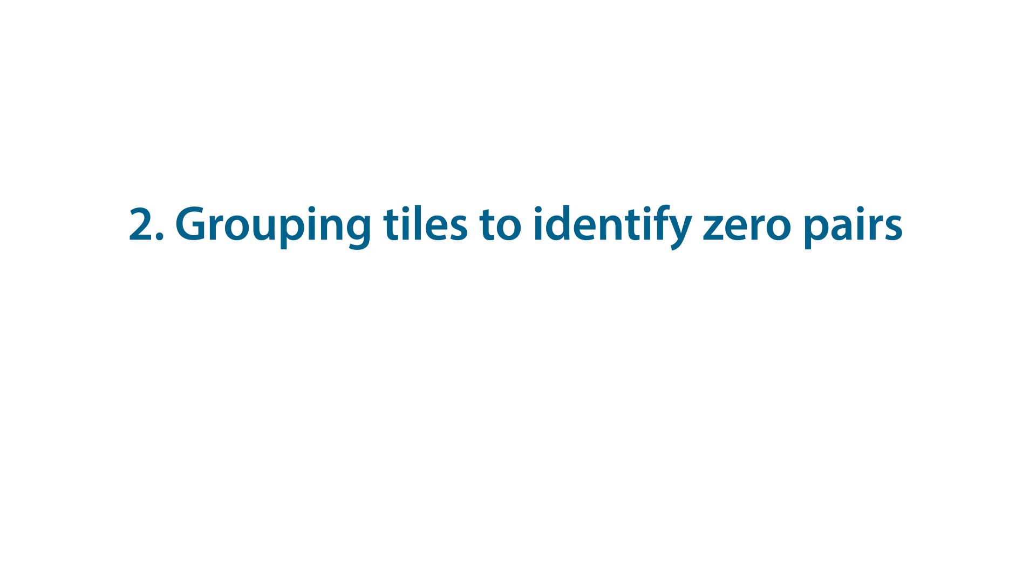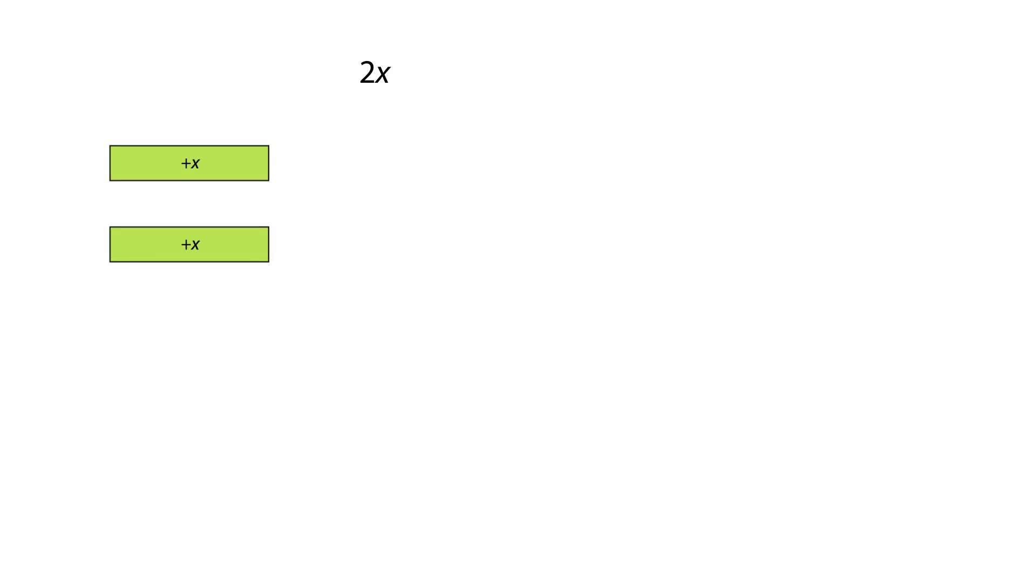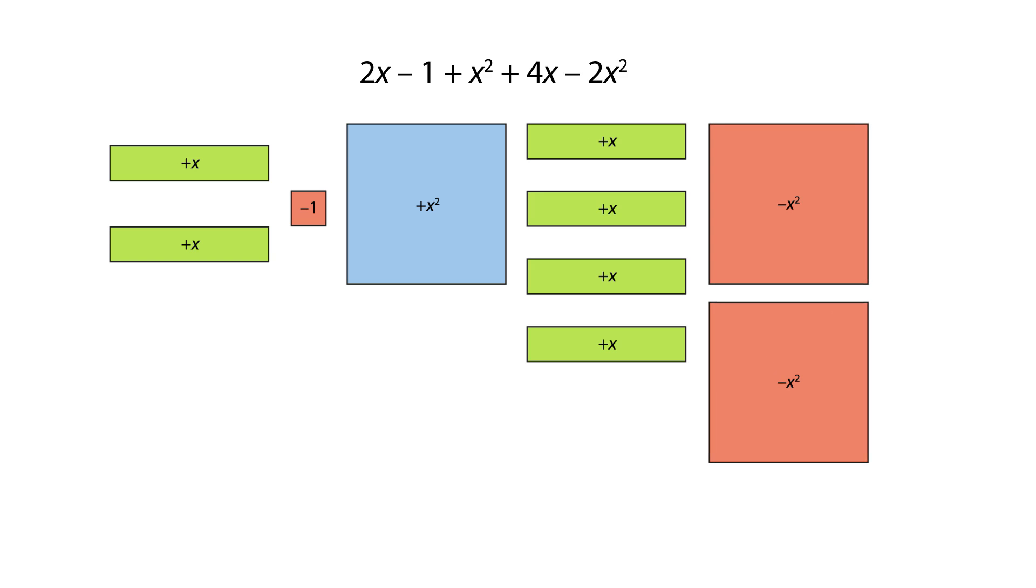Now let's look at grouping tiles to identify zero pairs. We can represent the expression 2x - 1 + x² + 4x - 2x² + 3 using the tiles.